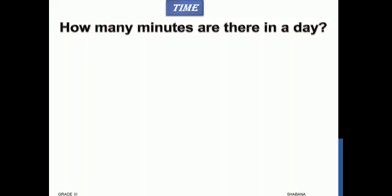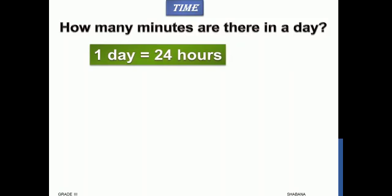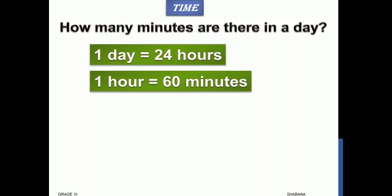How many minutes are there in a day? We know that one day is equals to 24 hours, and one hour is equals to 60 minutes. So in a day we have 24 hours, but we need to find how many minutes are there in one whole day. So to find that, 24 hours is equals to 24 multiplied by 60.